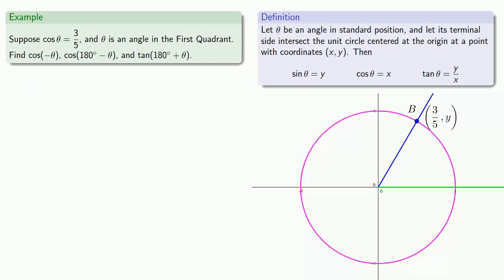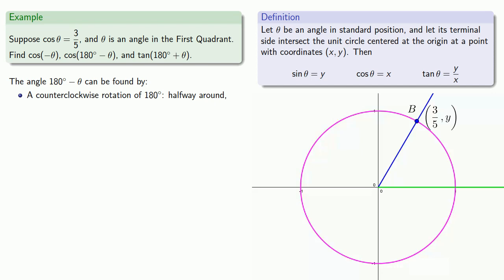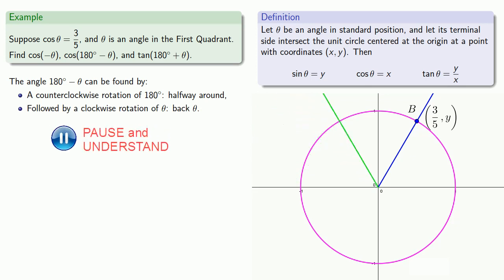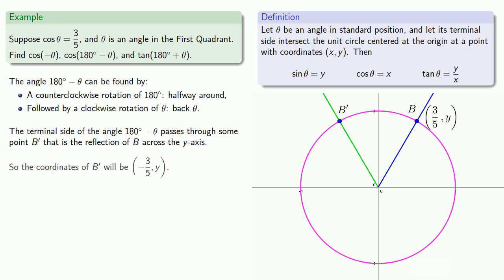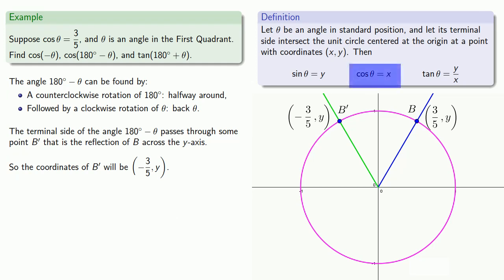When we want to find cosine of 180° - θ, we have to think about this angle. The angle 180° - θ can be found by a counterclockwise rotation of 180° — that's halfway around — followed by a clockwise rotation back of θ. So the terminal side of the angle 180° - θ passes through a point B' that is the reflection of B across the y-axis. So the coordinates of P' will be (-3/5, y). Since the x-coordinate is the cosine, cosine of 180° - θ is -3/5.